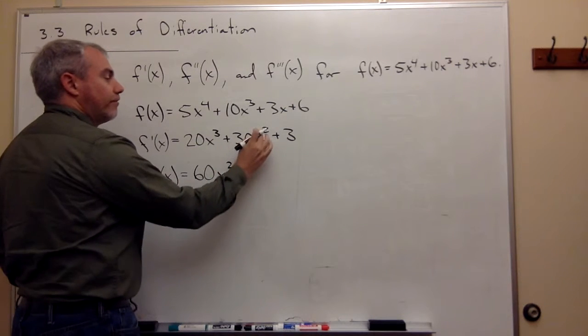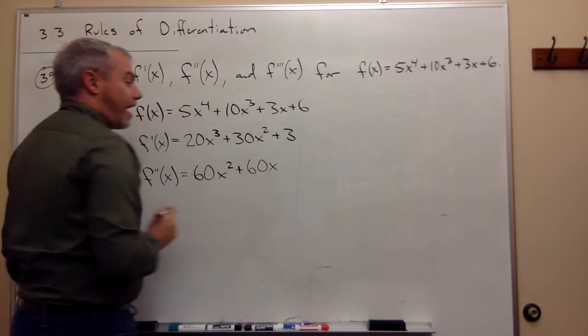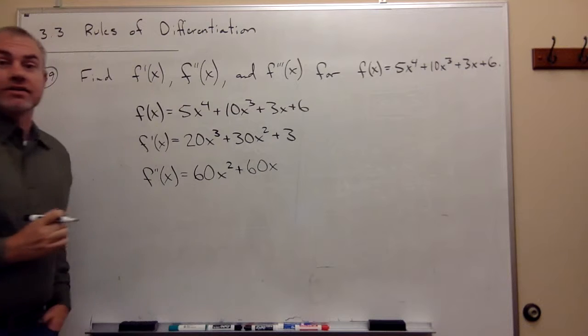Plus the derivative of 30x squared, bring down the 2, I get 60x, and the derivative of 3 is 0.